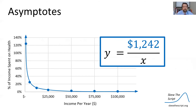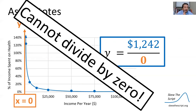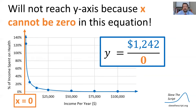Remember, we have y = 1242/x. The y-axis is where x = 0. If we plug x = 0 into our equation, we get y = 1242/0, but we cannot divide by zero — that's a mathematical principle. So we cannot reach the y-axis because x cannot be zero in this equation. If we plug in x = 0, this equation does not work.